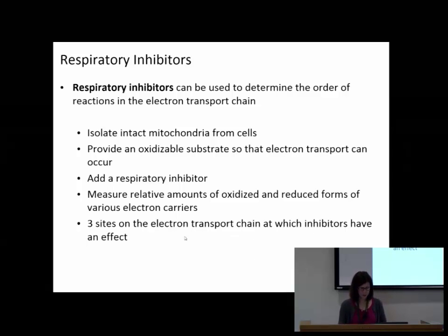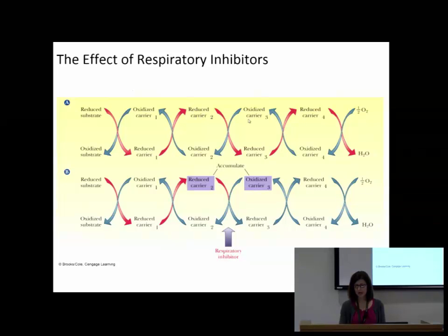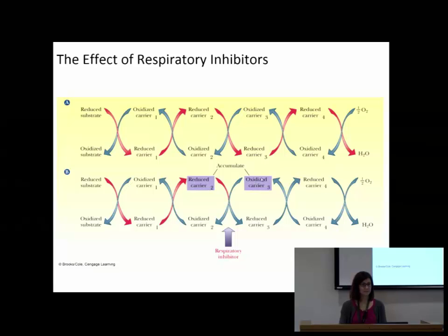So this should be familiar - you have a carrier with electrons giving them to one without electrons. Now it has the electrons, reacting with the next oxidized carrier. If I put something in that inhibits this reaction, we're going to accumulate higher levels of both the carrier before and the carrier at the block. If they both build up out of all the things in your complex, then they must be associated together.